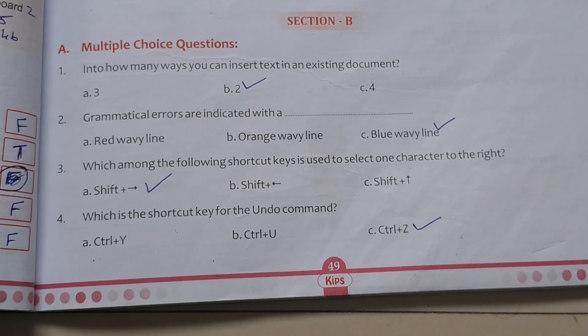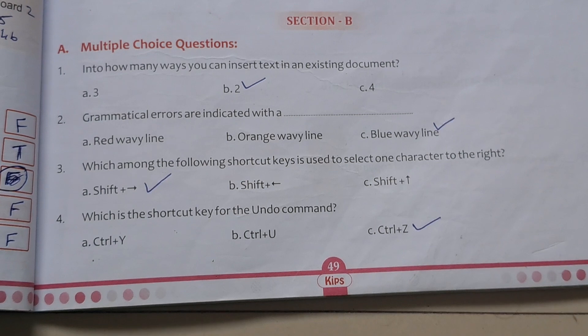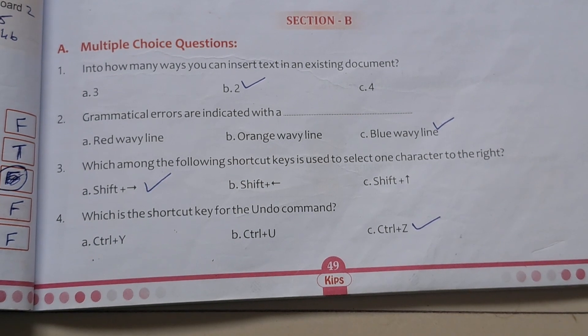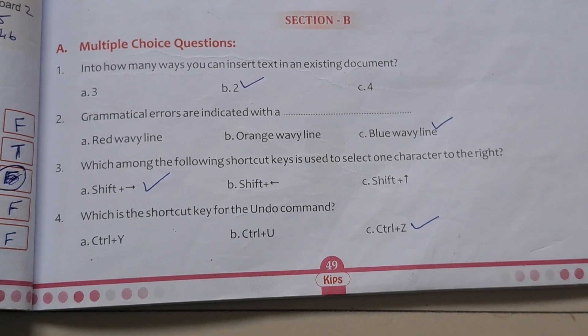Grammatical errors are indicated with a blank wavy line. The options are red wavy line, orange wavy line, and blue wavy line. Answer is Blue wavy line.